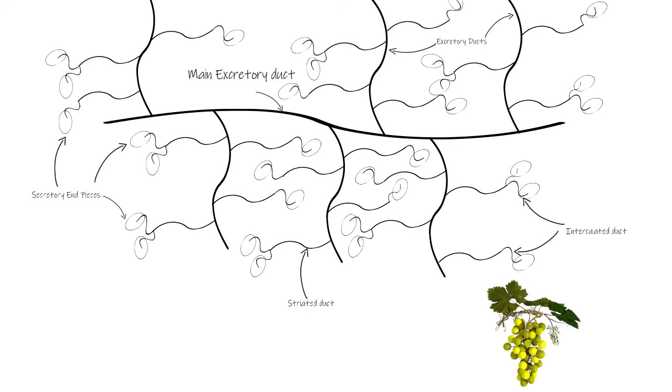In some glands, small extensions of the lumen known as intracellular canaliculi may be present between adjacent cells, serving to increase the surface area of the lumen. Looking at this entire formation closely, you may notice a similarity to a bunch of grapes, with the grapes representing the end pieces and the branches representing the ductal system.